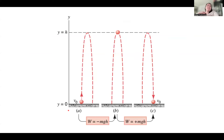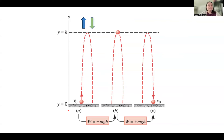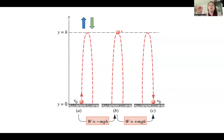Now we have a ball experiencing gravity. The ball is launched upward with initial velocity V naught, giving it an initial kinetic energy of one-half MV naught squared. As the ball rises, Earth does work on it until it reaches maximum height H. The direction of motion is upward and the direction of the gravitational force is downward, so going from the ground to peak height, they are in opposite directions, giving negative work equal to MGH. At the peak of the trajectory, the Y component of velocity is zero, so kinetic energy is also zero.